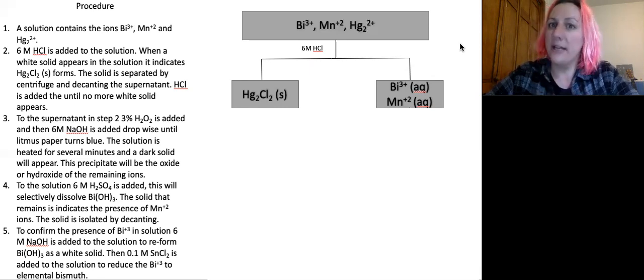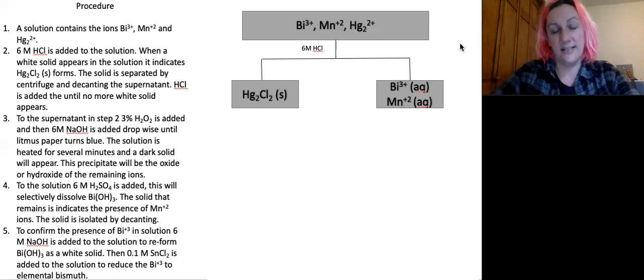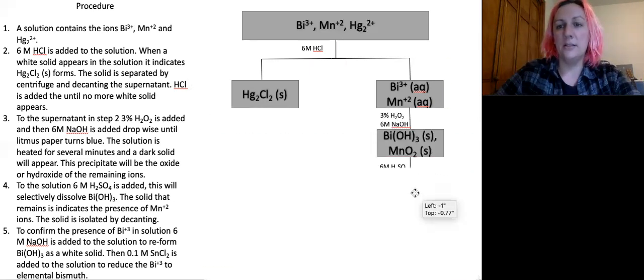But it will be important to the following step where we then take acid, six molar sulfuric acid, and that acid will only dissolve the bismuth hydroxide and not the manganese oxide. So I'm going to include this step even though it's not a separation, and it's going to look something like this.